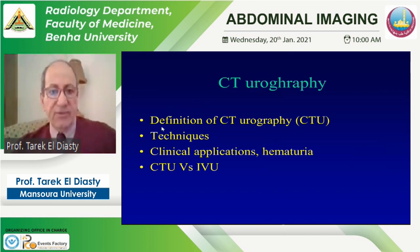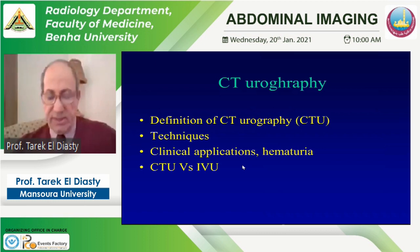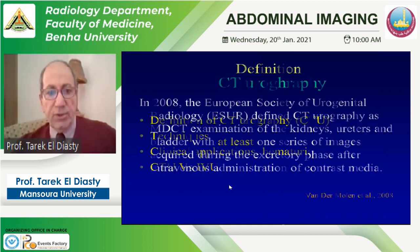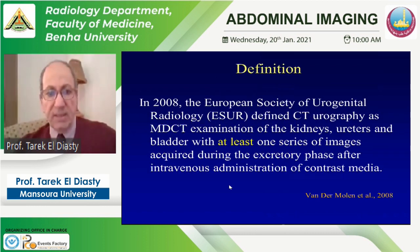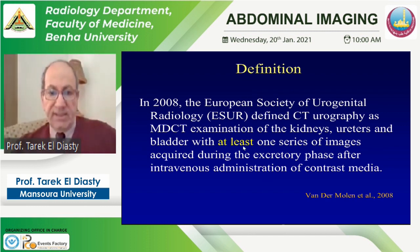CT urography has two definitions — an old and an updated one. In 2008, the European Society of Urogenital Radiology defined CT urography as a multi-detector CT examination of the kidneys, ureters, and bladder, with at least one series of images acquired during the excretory phase after intravenous administration of iodinated contrast medium. The excretory phase is essential, and a multi-detector CT scanner is required.